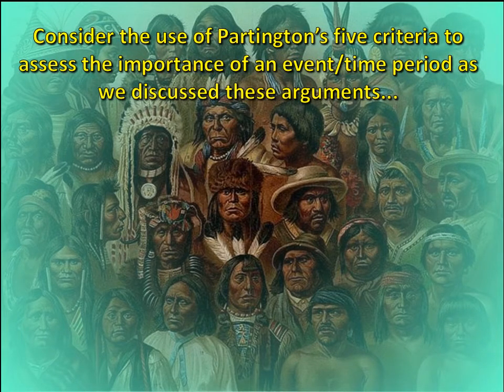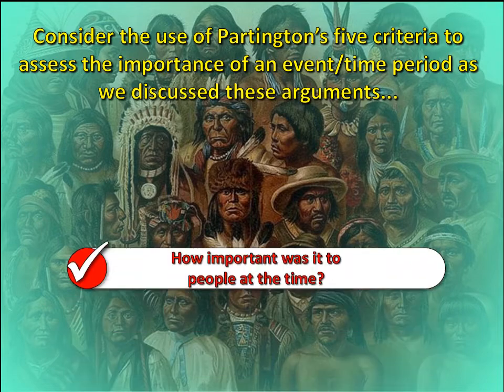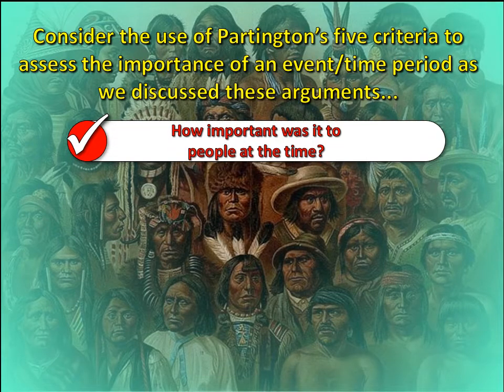We're now going to move to the significance of the 1970s for Native American rights. As we do this, I'd encourage you to consider the use of John Partington's five criteria to assess the importance of an event or a time period. His first criteria is: how important was this event or time period to people at the time? This will help you decide its importance.